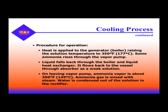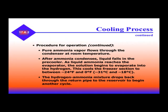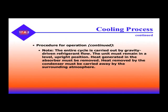Heat is applied to the generator, raising the ammonia solution to 350 degrees. Some ammonia rises through the vapor pump, while liquid falls back through the boiler and liquid heat exchanger, flowing back to the vessel through the absorber as a weak solution. On leaving the vapor pump, ammonia vapor is about 300 degrees. Ammonia gas is mixed with steam, and water is condensed out of the solution in the rectifier. Pure ammonia vapor flows through the condenser at room temperature, then liquid falls to the pre-cooler. As liquid ammonia reaches the evaporator, it evaporates into the hydrogen, cooling the freezer section between -24 and 0 degrees. The hydrogen-ammonia mixture drops back through the return pipe to the reservoir. The entire cycle is driven by gravity-driven refrigerant flow, so the unit must remain level and upright. Heat generated in the absorber must be removed, and heat removed by the condenser must be carried away to the surrounding atmosphere.